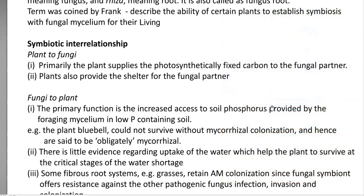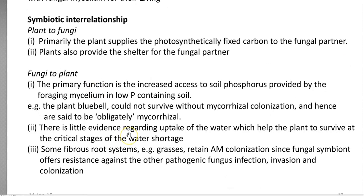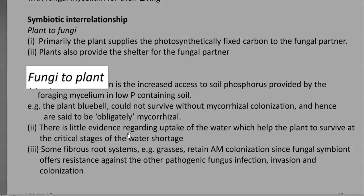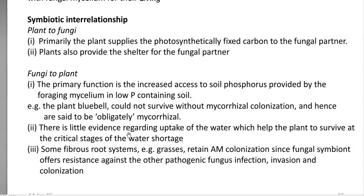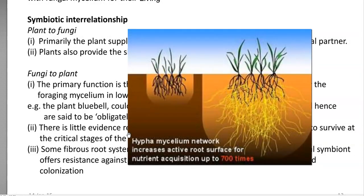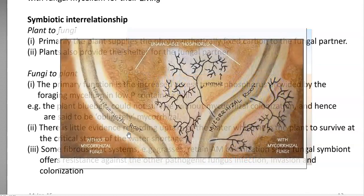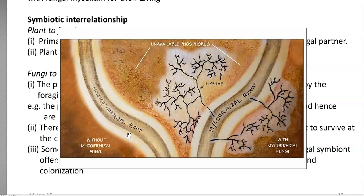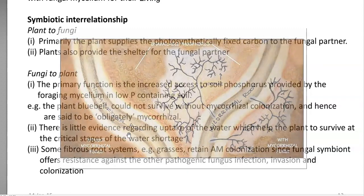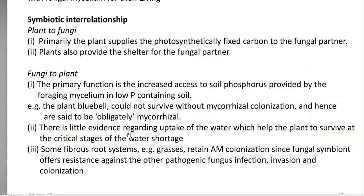The plant is also the place in which the fungi grows, so the plant acts as shelter — a house for the fungal partner to multiply. Now, what nutrition do fungi give to the plant system? The primary function is the increased access to soil phosphorus, facilitated by special foraging mycelium produced by the mycorrhiza, which helps in taking phosphorus from other regions and mobilizing it to the plant system.